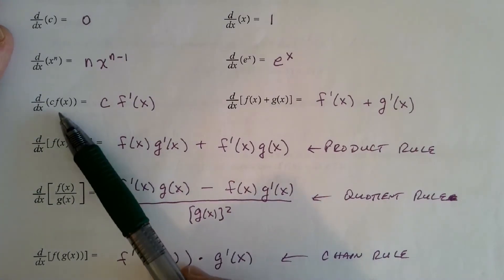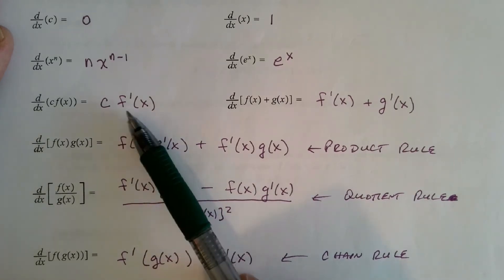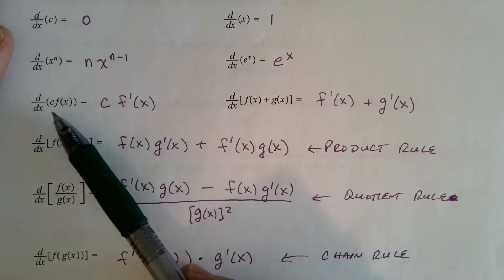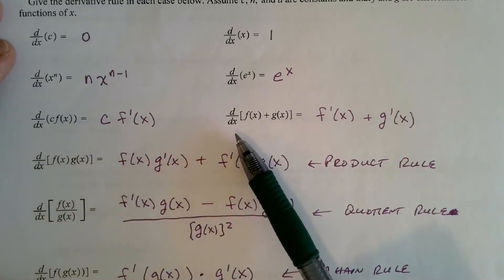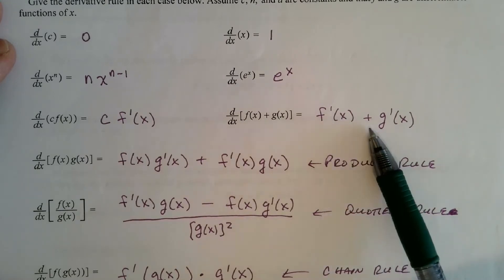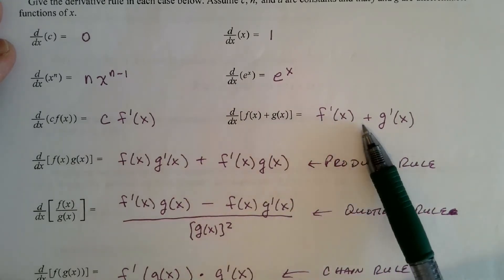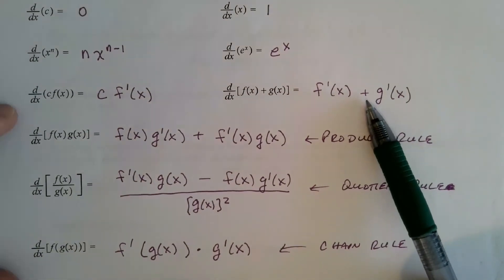Linearity properties: the derivative of a constant times a function is the constant times the derivative f prime of the differentiable function f. The sum rule: the derivative of a sum is the sum of the derivatives. Same with a difference — it's just the difference of the derivatives. That comes from the linearity rules.